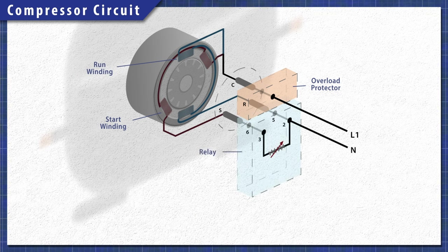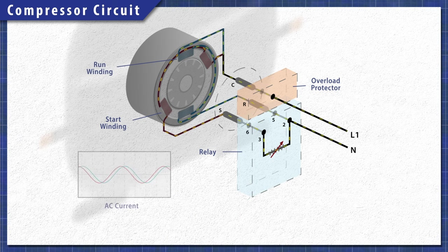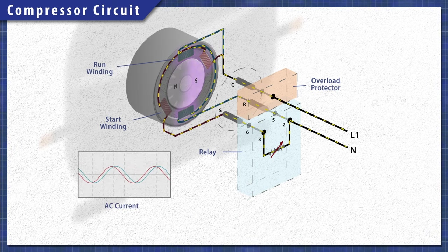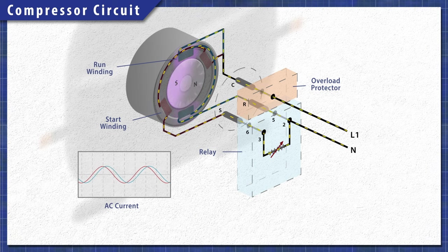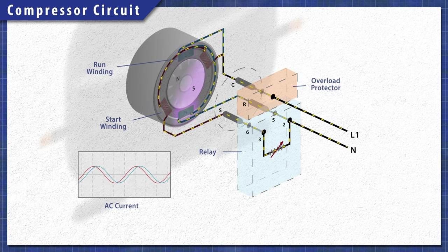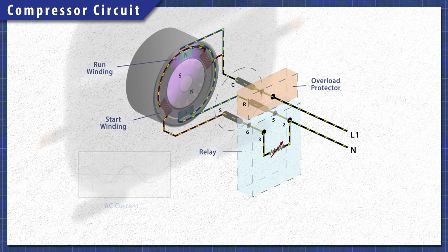Single phase motors use resistance or a capacitor to create a phase shift in the start winding. This rotating magnetic field creates the torque needed to start the motor.